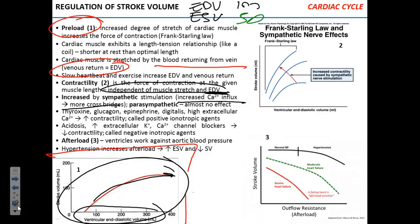Anything that increases calcium availability or calcium transport into the cells increases contractility. That would include thyroxin, epinephrine, the drug digitalis, and glucagon — everything that increases calcium either in the cells or outside so it can diffuse in. These agents that increase calcium concentration and increase strength of contraction are called positive inotropic agents.